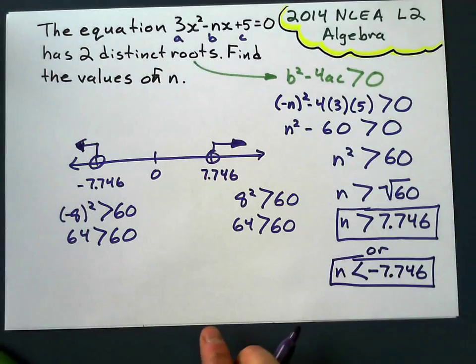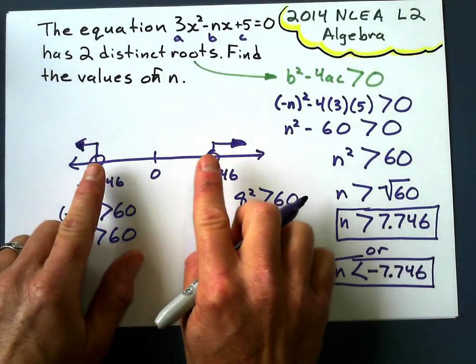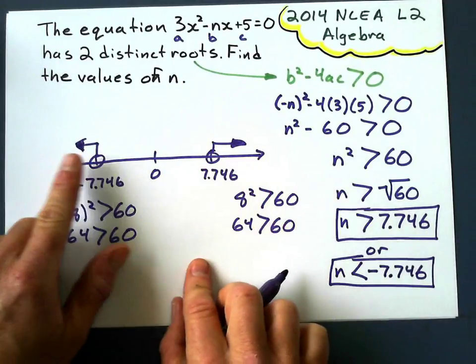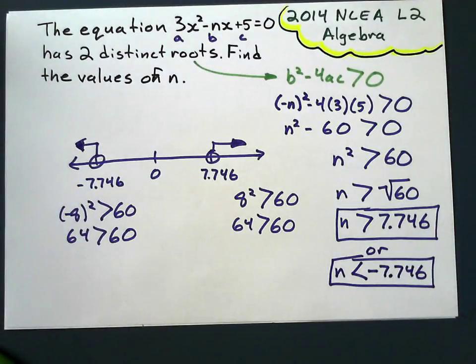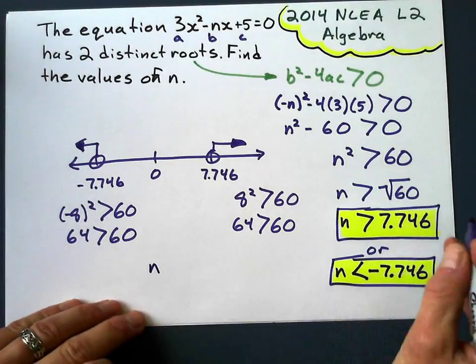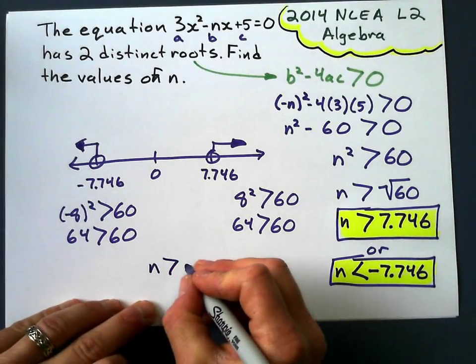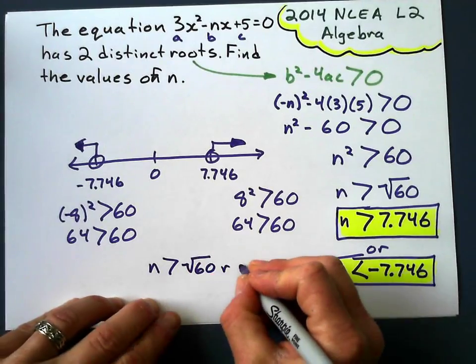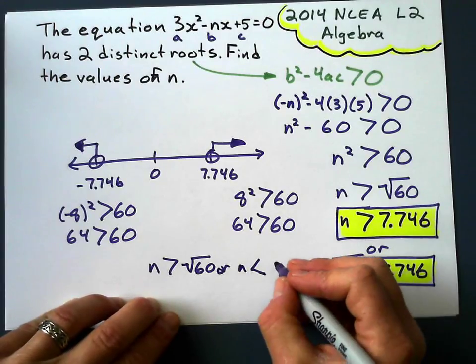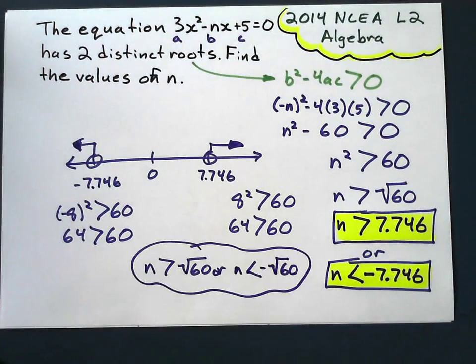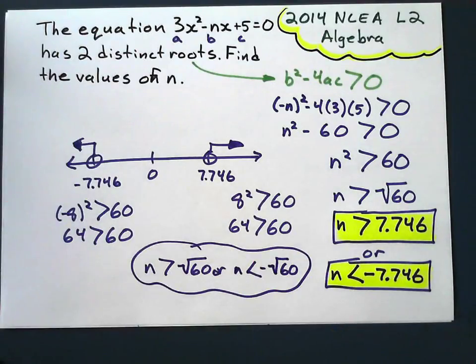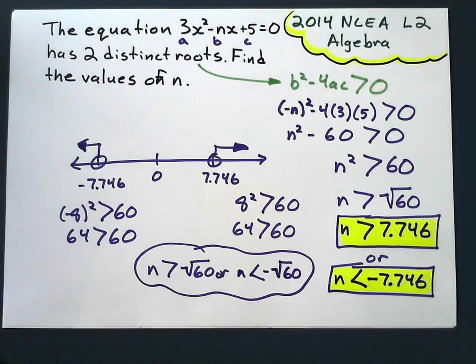And that is why this one leads to a bit of confusion, because our solution, our values of n, are all numbers that are greater than 7.746 or less than negative 7.746. Of course, you can write it without using any of the decimal notation. You can say n is greater than square root of 60, or n is less than negative square root of 60, which is represented by my highly accurate number line here. All right, there we go.